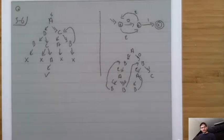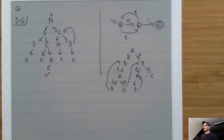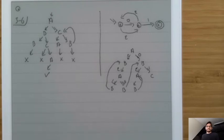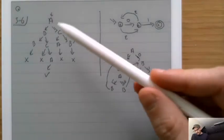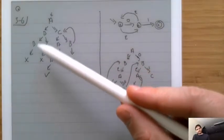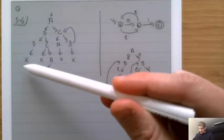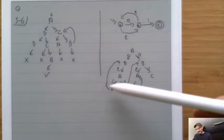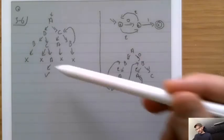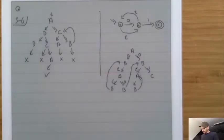How can we take an NFA and figure out whether or not a string is accepted without risking infinite execution? The key idea is to do a breadth-first search of this tree. If we go depth-first, we may go down an infinite path, which is dangerous. But if we do it breadth-first, we'll always be fine.